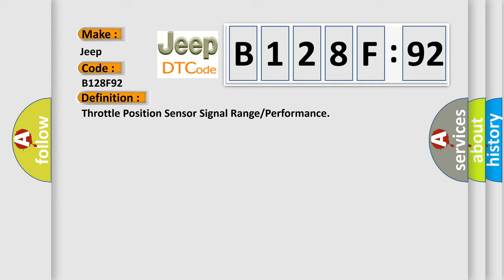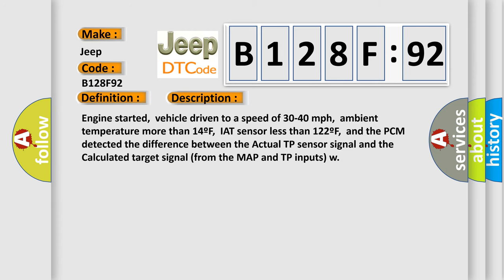And now this is a short description of this DTC code. Engine started, vehicle driven to a speed of 30 to 40 miles per hour, ambient temperature more than 14F, IAT sensor less than 122F, and the PCM detected the difference between the actual TP sensor signal and the calculated target signal from the MAP and TP inputs.